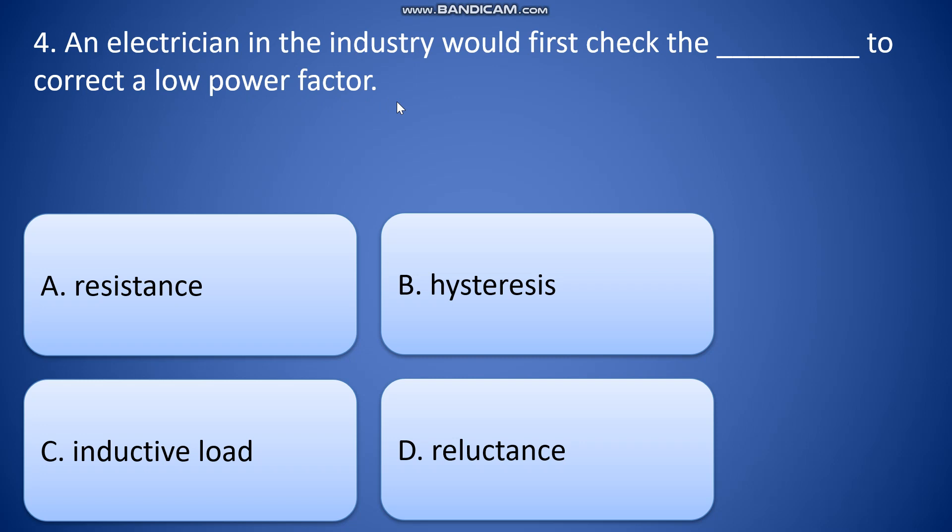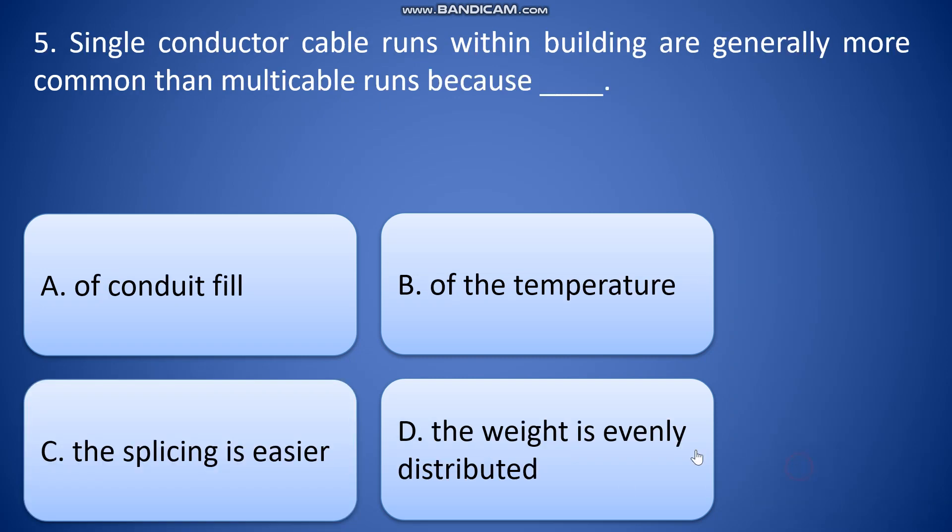Single conductor cable runs within building are generally more common than multi-cable runs because: A: of conduit fill, B: of the temperature, C: the splicing is easier, and D: the weight is evenly distributed. So the answer will be C.